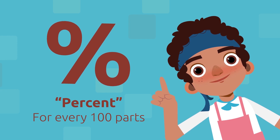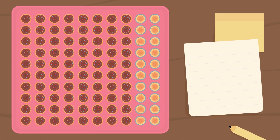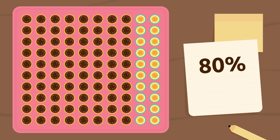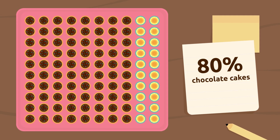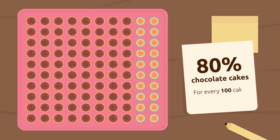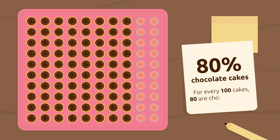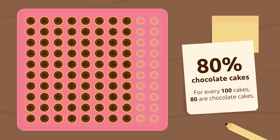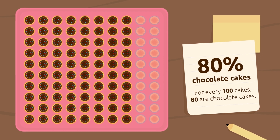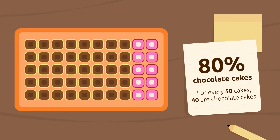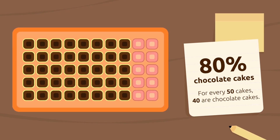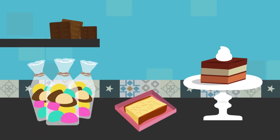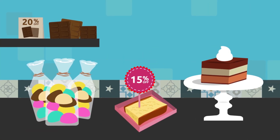Let's look at an example. Here we have 100 cakes, and 80% of them are chocolate cakes. We want to express this by saying that for every 100 cakes, 80 are chocolate cakes. The number of elements doesn't have to be 100 — let's look at 50 cakes, for example. 80% of them are chocolate cakes too.